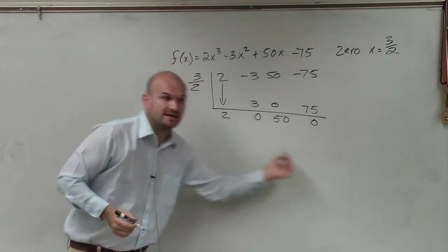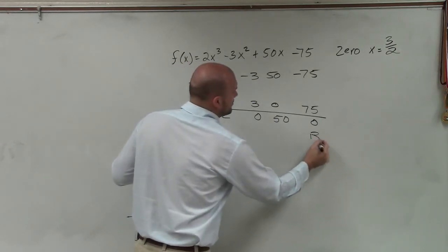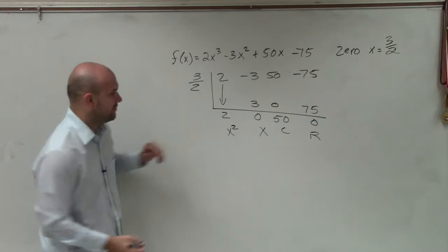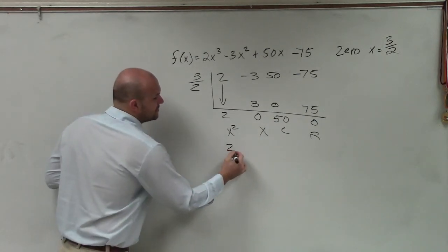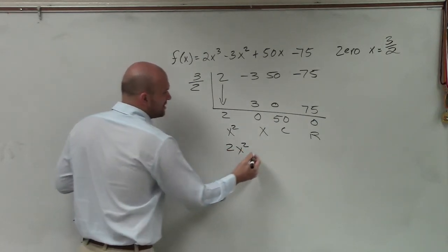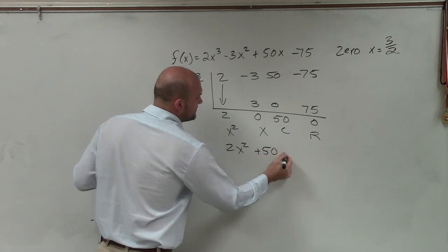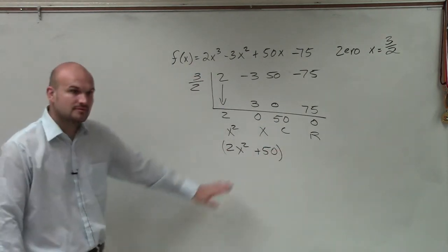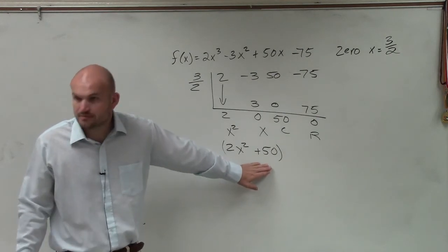Then remember, we always work from the right to the left. So I say remainder, constant, linear, quadratic. So therefore, now I can rewrite my answer as 2x squared plus 50. So that's going to be my other factor. That's going to be what we call our quotient, the answer to that. That's going to be my other factor.